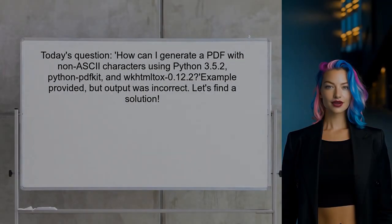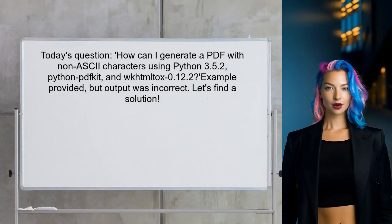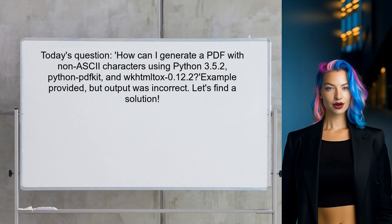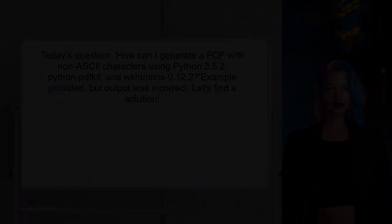Here's the specific question we're addressing today. One user asked: how can I generate a PDF with non-ASCII characters using Python 3.5.2, Python PDFKit, and WKHTMLTOPDF 0.1.2? They provided a simple example, but the output was incorrect. Let's dive into this and find a solution.